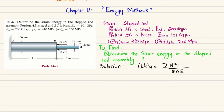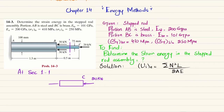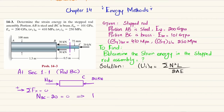First, we cut the step rod at section 1-1 and draw the free body diagram. On the right side we have point C with a 20 kN load. To keep it in equilibrium, there is a reaction force NBC in rod BC. Using the equation of equilibrium — sum of forces in the x-direction equals zero, with rightward forces positive — we get NBC minus 20 kN equals zero, so NBC equals 20 kN.